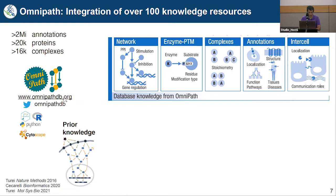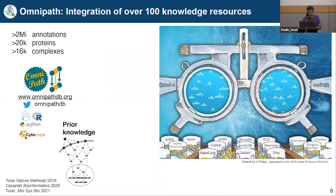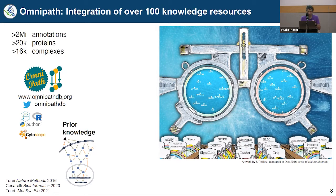OmniPath keeps all the underlying annotations — now over two million, coming from over 100 different databases. It is driven by our own research questions but of course we make it publicly available for scientists to use. The idea is that many databases have knowledge with different emphases — some focused on the immune system, some on cancer. Through OmniPath you can plug and play different resources, the same way you try different lenses when getting new glasses to find the one that lets you see sharply.